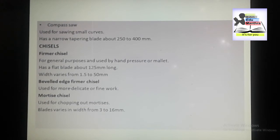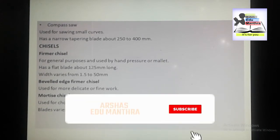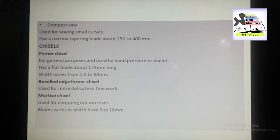Next we have the beveled edge firmer chisel. The beveled edge firmer chisel is used for more delicate or fine work. It is useful for getting into corners where the ordinary firmer chisel would be clumsy. So compared to the firmer chisel, the beveled edge firmer chisel is better suited for corners and fine work.